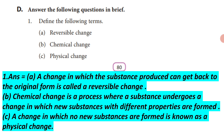D. Answer the following questions in brief. First, define the following terms: A. Reversible change, B. Chemical change, C. Physical change. Answer: A. A change in which the substance produced can get back to the original form is called a reversible change. B. Chemical change is a process where a substance undergoes a change in which new substances with different properties are formed. C. A change in which no new substances are formed is known as a physical change.